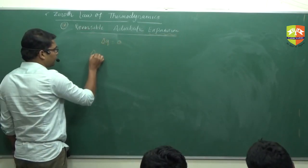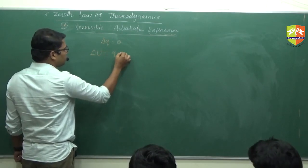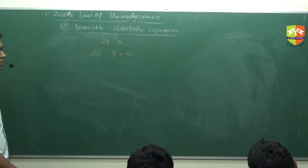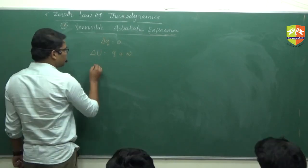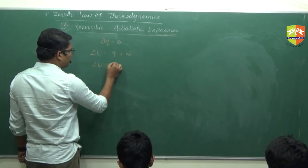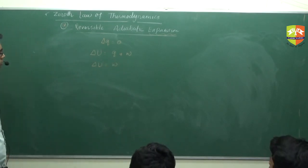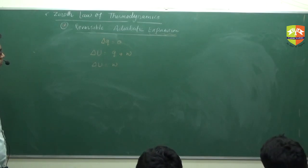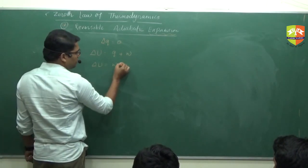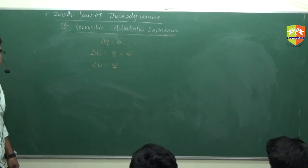From the first law of thermodynamics, delta U equals Q plus W (work done by the system). When Q equals zero, delta U equals the work done. Since work is done by the system, work is negative, so delta U is also negative.